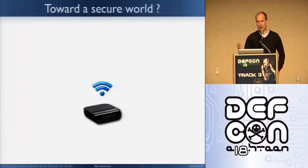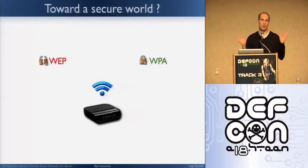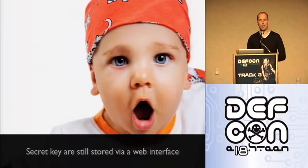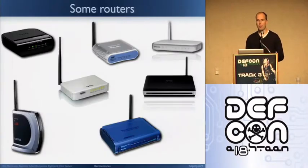Over the years we see something really good: people moving away from open web toward something more secure, which is WPA. And even at DEF CON this year we have a secure network. But something remains — we are still storing the WPA key through a web interface. Our idea was: maybe we can't break WPA directly, but we can attack this web interface. To confirm that, we went to a store and bought a bunch of routers from different brands — eight of them — and the result was we were able to break all of these brands and retrieve the WPA key.